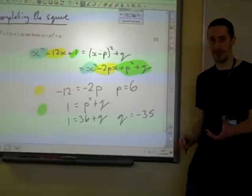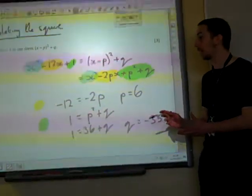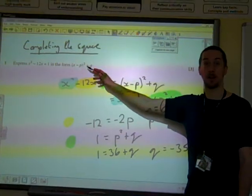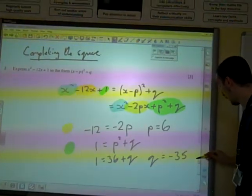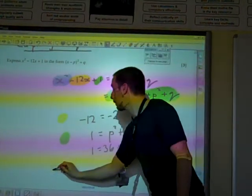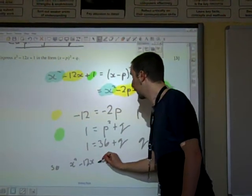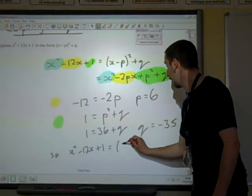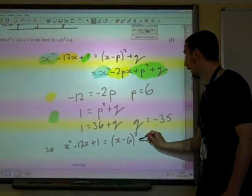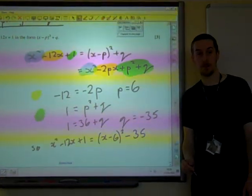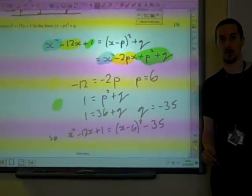And the question didn't say find p and q. It said express that in the form (x - p)² + q. So we're going to finally say that we've got x² - 12x + 1 is (x - 6)² minus 35. Yes. Yes. Good.